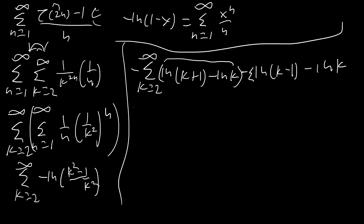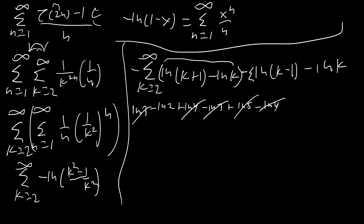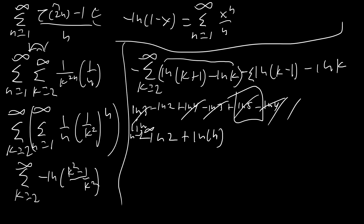Writing out the first few terms explicitly: minus ln(2) plus ln(4) minus ln(3) plus ln(5) minus ln(4) — we can cross out all the bits that cancel, and this pattern keeps canceling. Overall we're going to have minus ln(2), and for the last term we're always going to have a leftover ln(n), so we write plus ln(n), all in the limit as n goes to infinity.